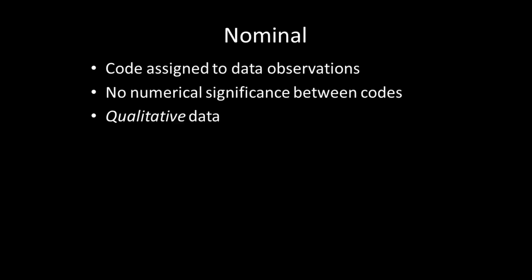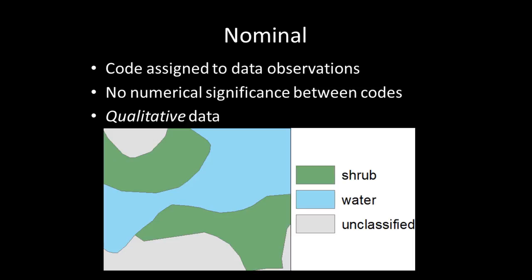This image shows an example of geographically mapped nominal data. You are seeing a map of shrub, water, and unclassified land use categories. These land use categories do not have a numerical difference between them, and are simply codes used to identify each land type.